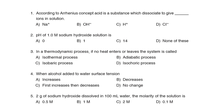First Question: According to Arrhenius concept, an acid is a substance which dissociates to give dash ions in solution. Correct Answer is Option C: H+ ions. Second Question: The pH of 1.0 molar sodium hydroxide solution is. Answer: Option C: 14.